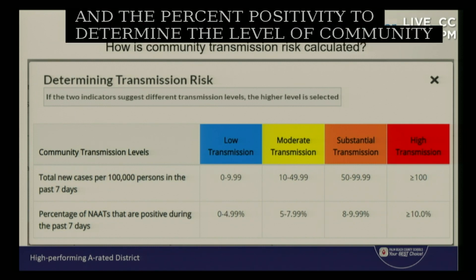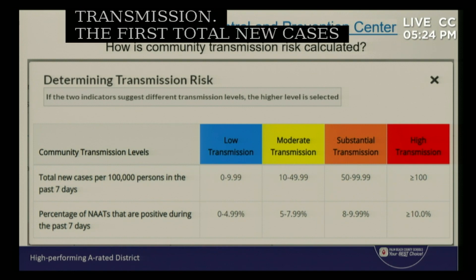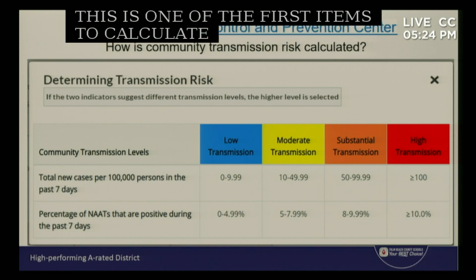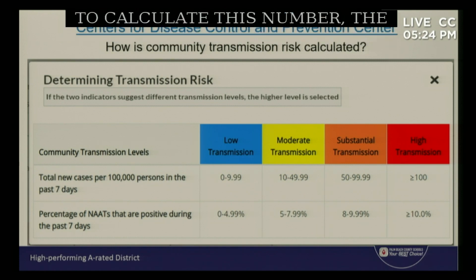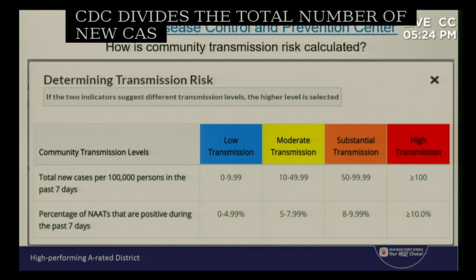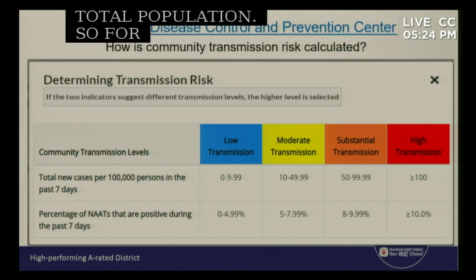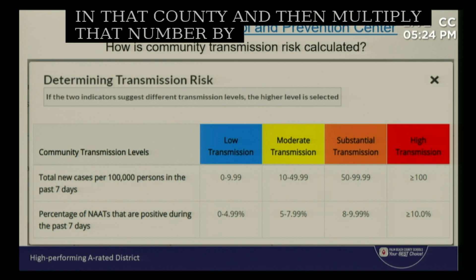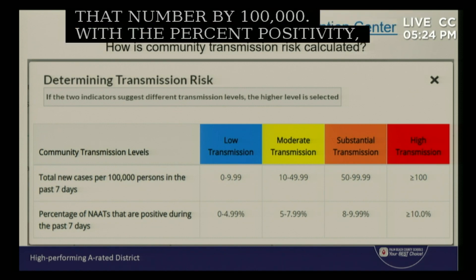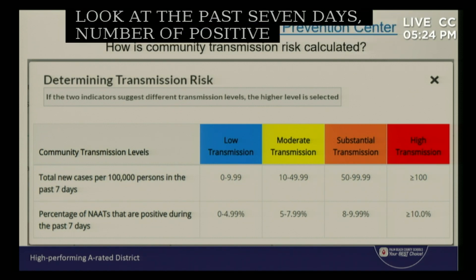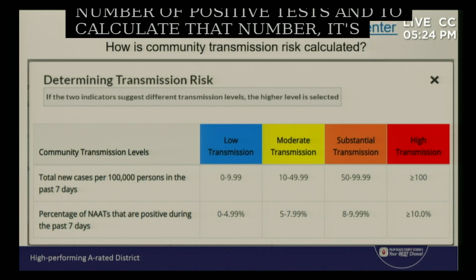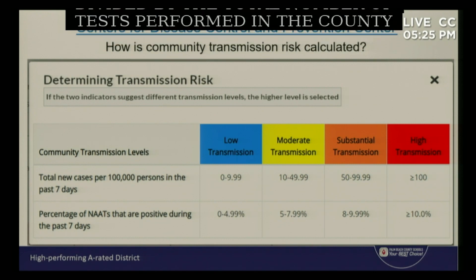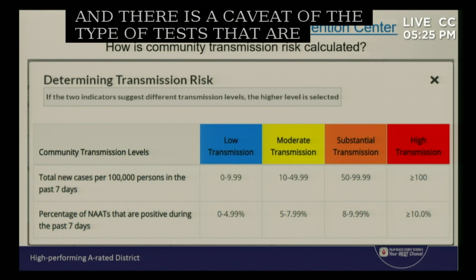The first indicator is total new cases per 100,000 in the past seven days. To calculate this number, the CDC divides the total number of new cases by the total population — for us about 1.5 million in the county — then multiplies by 100,000. For percent positivity, we look at the past seven days: the total number of positive tests divided by the total number of tests performed in the county, then multiplied by 100,000.